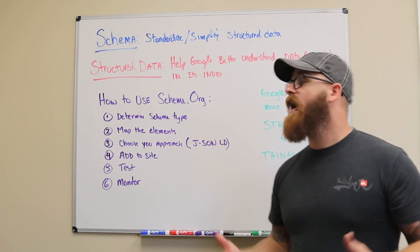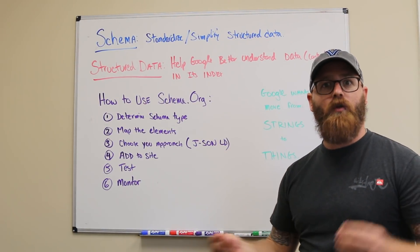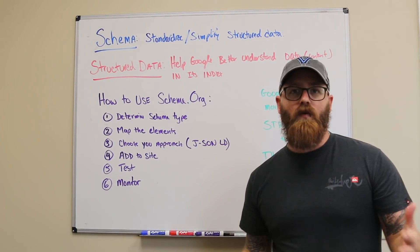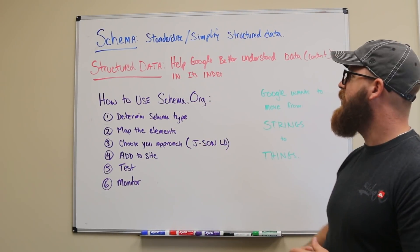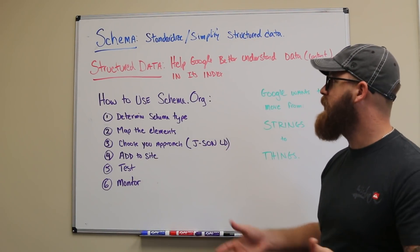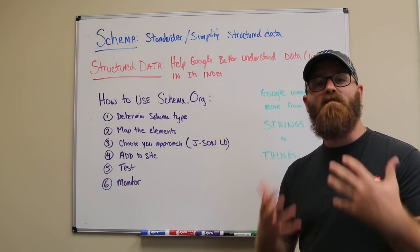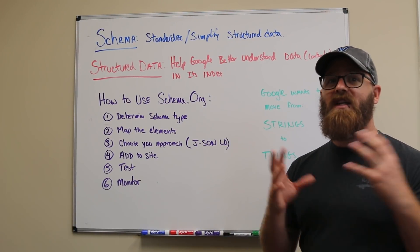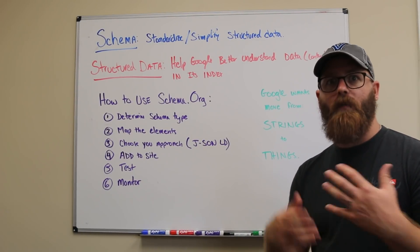So schema is a standardized and simplified structured data process. It tells us how to structure certain parts of data, whether it be a movie or an image or a product or a review that somebody might have gotten on a website. It helps us simplify structured data. So what's structured data? It helps Google and the other search engines better understand their data, content in its index. By adding structured data, you're actually giving search engines better information about your site, what's on that site, how they should really categorize the site, and really to understand what the different elements on your page are about, how they're actually helping tell your story and helping the users in the long run.